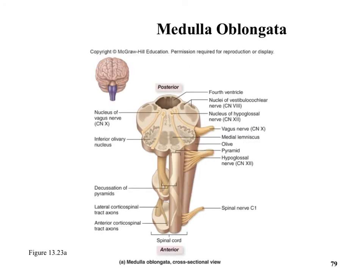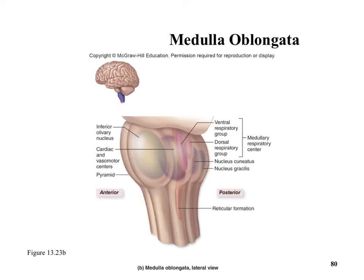The medulla contains nuclei of cranial nerves ten through twelve — the vagus nerve is cranial nerve ten, part of the medullary respiratory center. From there you get down to spinal nerve C1. At that point, the white matter is on the outside and the gray matter is on the inside. The cardiac and vasomotor centers and the dorsal and ventral respiratory groups are important for autonomic function.